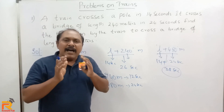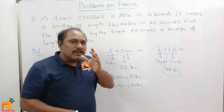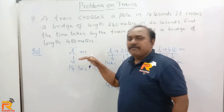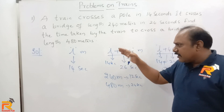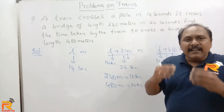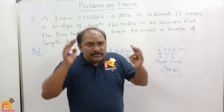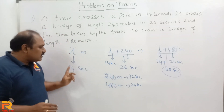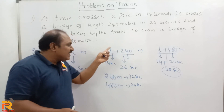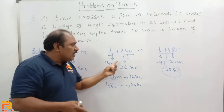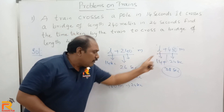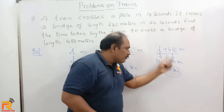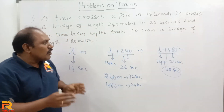You can see how simple this answer is without performing cross multiplication. Many students try to find the speed of the train by writing L divided by 14 equals L plus 240 divided by 26, doing cross multiplication, finding the length of the train, and then answering — which is a very lengthy process. The simple way is to analyze first. L meters in 14 seconds, L plus 240 in 26 seconds, so 240 meters in 12 seconds, and 480 in 24 seconds. Therefore L plus 480 takes 14 plus 24 equals 38 seconds to cross a bridge of length 480 meters.